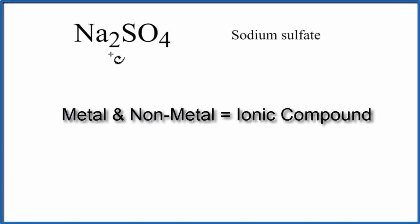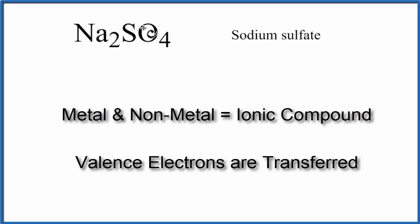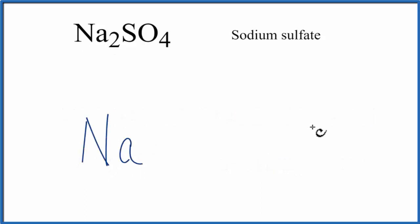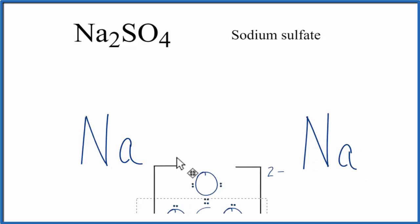In an ionic compound, valence electrons are transferred from the metal to the nonmetals. So we write Na, and we'll put our other Na over here because the sulfate goes in the middle. Then we'll put our sulfate ion right between those two Na's.